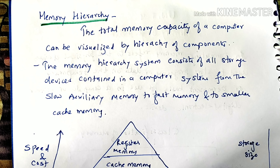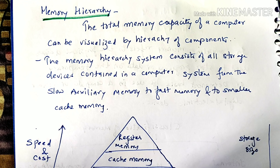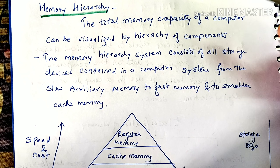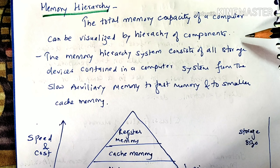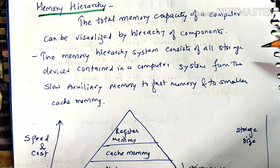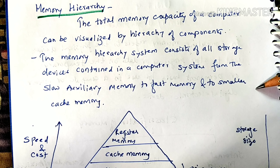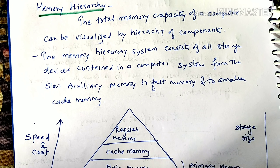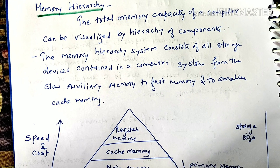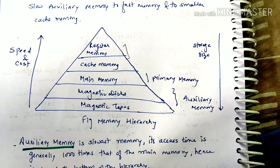There are multiple types of memories with a level of hierarchy — where data will be accessed fast, where it will be accessed slowly, and where the CPU can communicate. The total memory capacity of a computer can be visualized through a hierarchy of components. The memory hierarchy system consists of all storage devices in a computer system, from slow auxiliary memory to fast main memory and smaller cache memory.